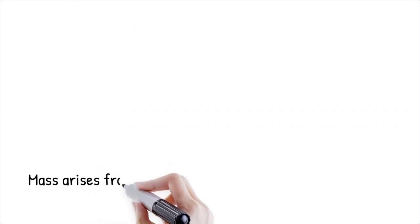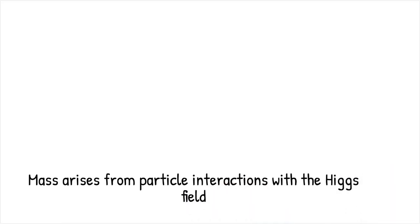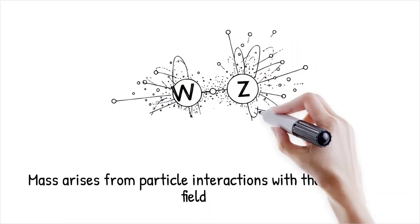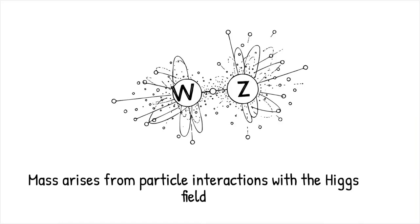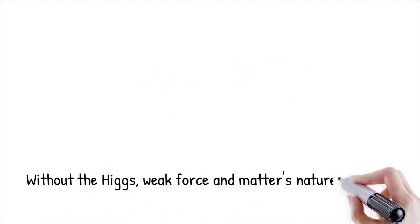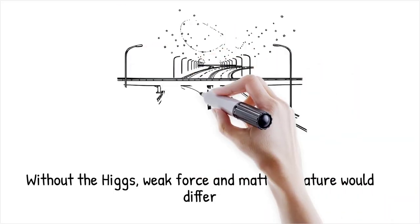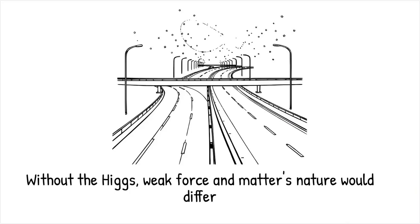Essentially, mass isn't just an intrinsic property — it's the result of how particles and the Higgs field interact with each other. For example, W and Z bosons, which mediate the weak nuclear force involved in radioactive decay, owe their hefty masses to a strong coupling with the Higgs field. Without the Higgs, these bosons would be massless like photons — particles of light — and the weak force would behave very differently, fundamentally altering the nature of matter and nuclear reactions.